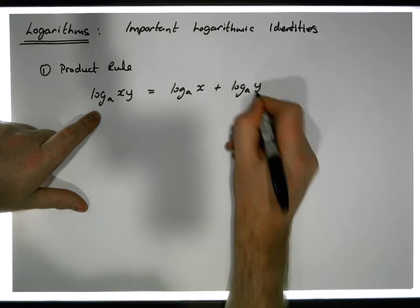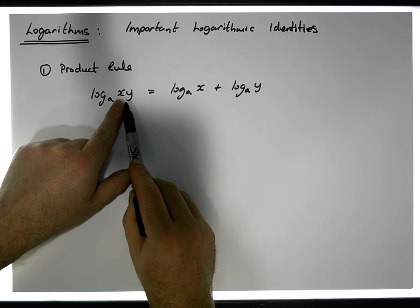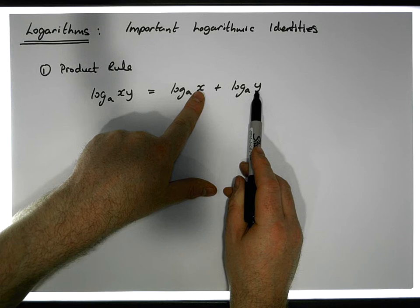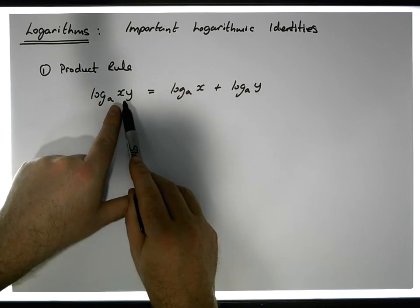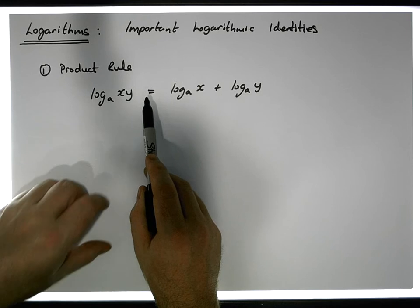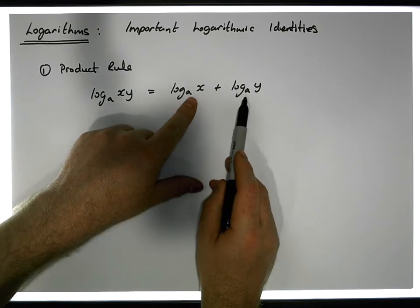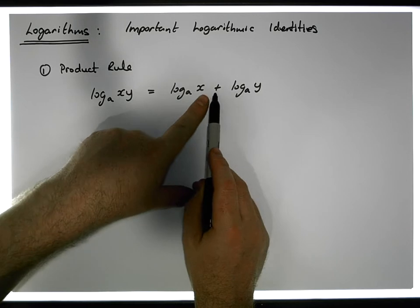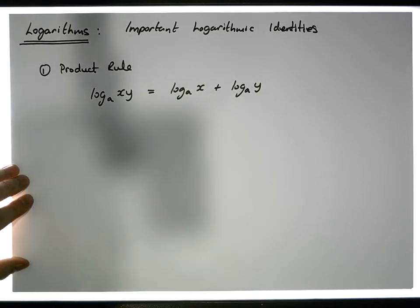What it's saying is that if you have a product you can break it out into a sum, or if you have a sum of logarithms to the same base you can calculate the product. It's a simplification rule that allows us to take two logarithms and combine them together, once the logarithms are to the same base. This is the product rule.